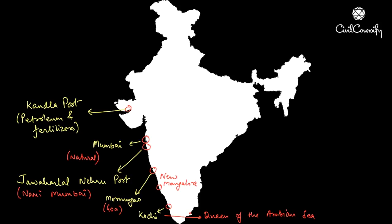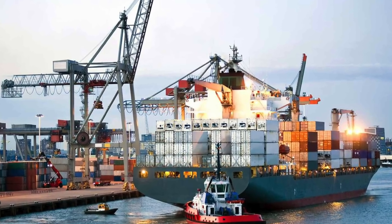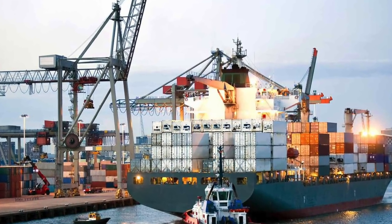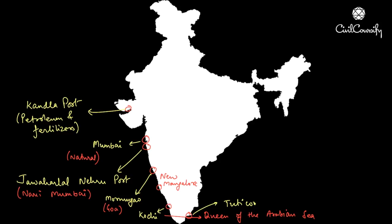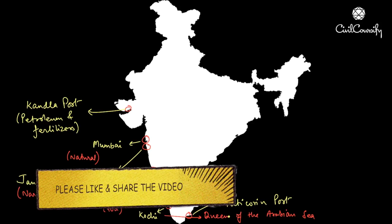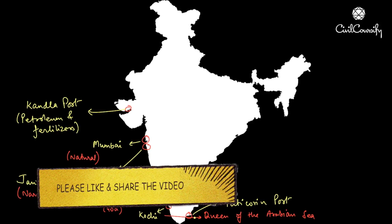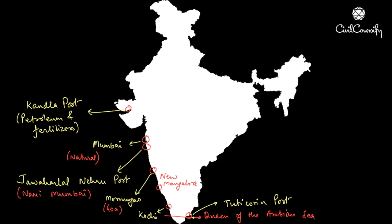Next we have the Tuticorin port. Tuticorin port was developed to relieve the pressure of the Chennai port and it deals with a variety of cargo including coal, salt, food grains, edible oils, sugar, chemicals and petroleum products.